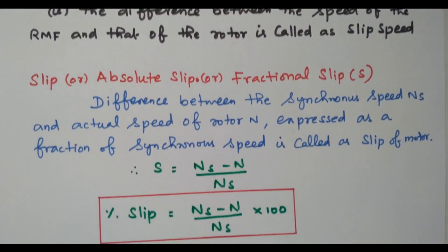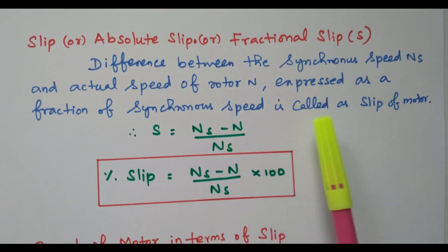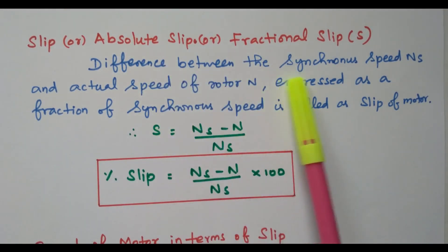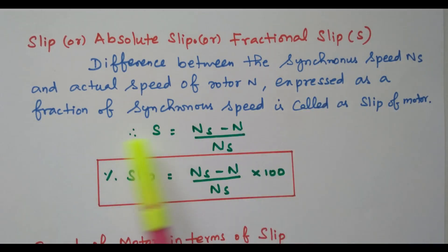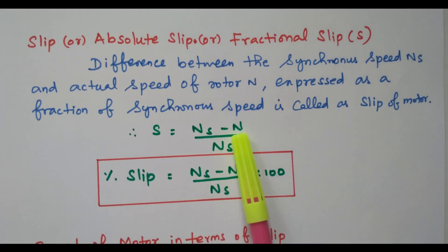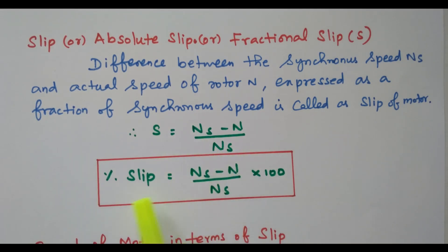The definition of slip: slip is also called absolute slip or fractional slip. It is the difference between synchronous speed and actual speed of the rotor, Ns and N, expressed as a fraction of synchronous speed — that is (Ns minus N) divided by Ns. For percentage slip, multiply by 100: (Ns minus N) divided by Ns, into 100.